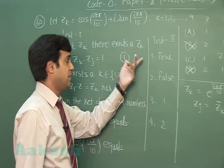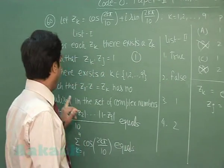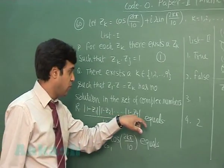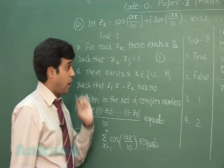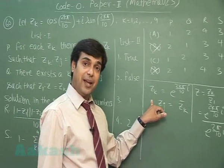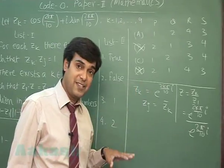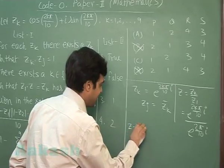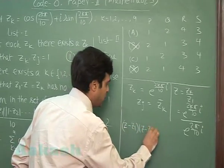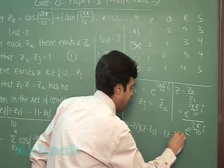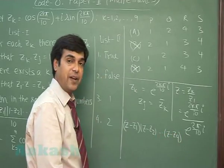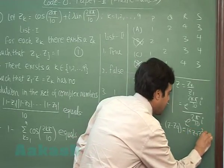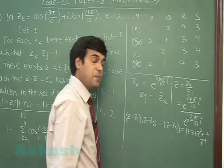Next, modulus of (1 minus z1)(1 minus z2) up to (1 minus z9). Now this is the tenth root of unity, right? z to the 10 minus 1 is 0. Now if we look at the term (z minus z1)(z minus z2) up to (z minus z9), the product of these nine factors, this will be equals 1 plus z plus z square up to z to the 9.